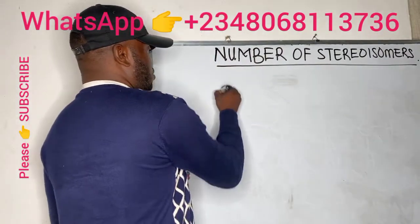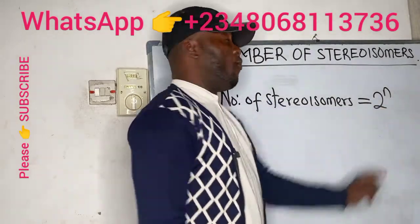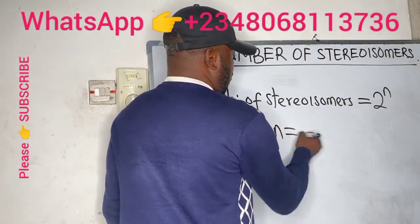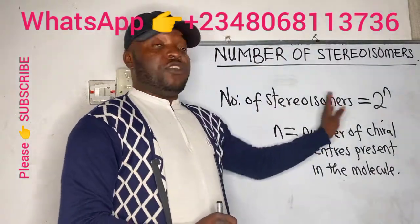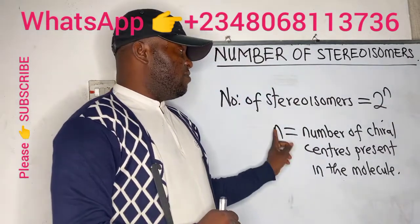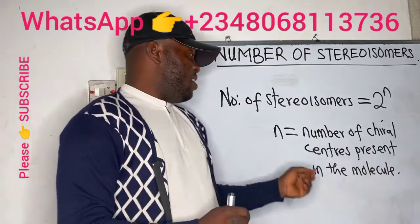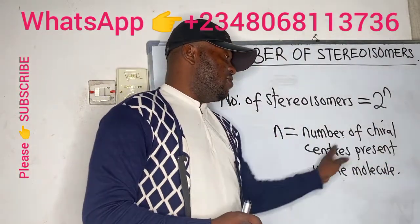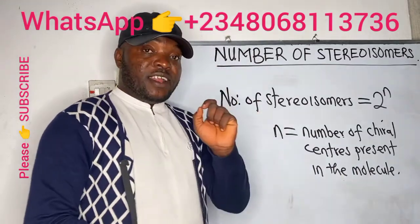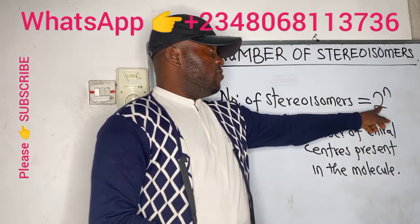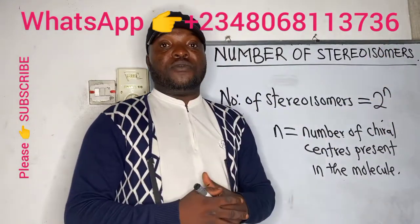Let's write it down: 2 to the power n. And what does n stand for? When you are looking for the number of stereoisomers in a molecule, all you need to find is n. n represents the number of chiral centers or chiral carbons present in the molecule. When you find the number of chiral centers present, raise 2 to that number — that is 2 raised to power n — and that is your number of stereoisomers.